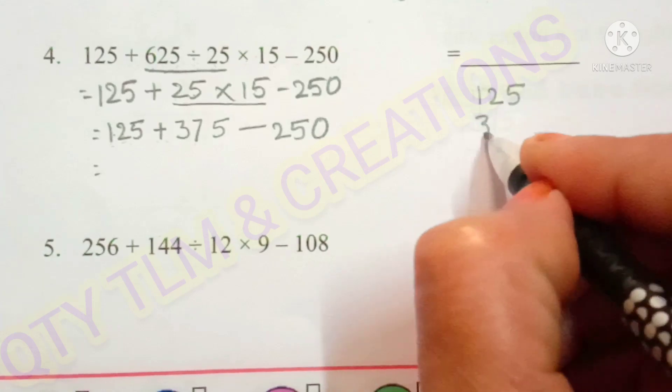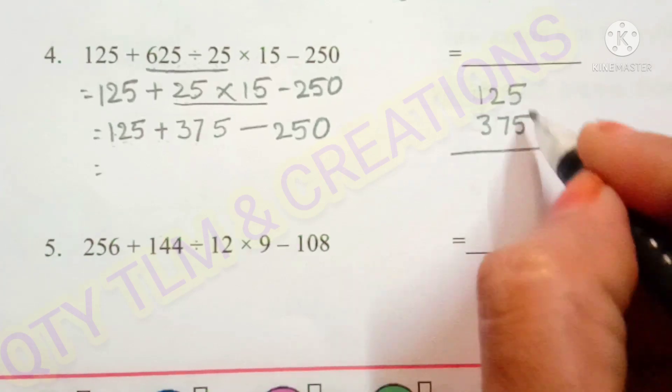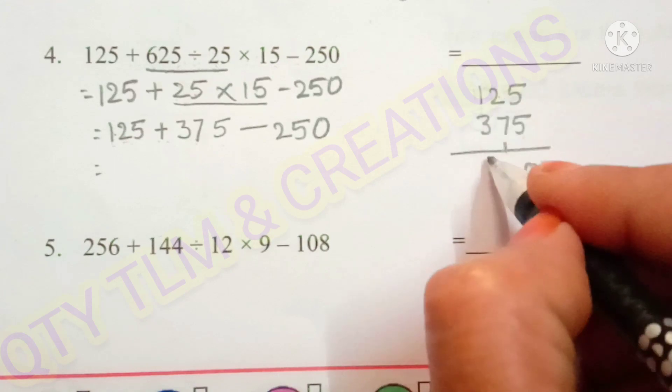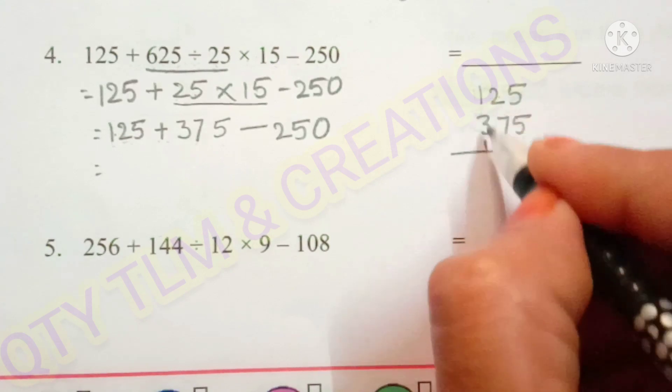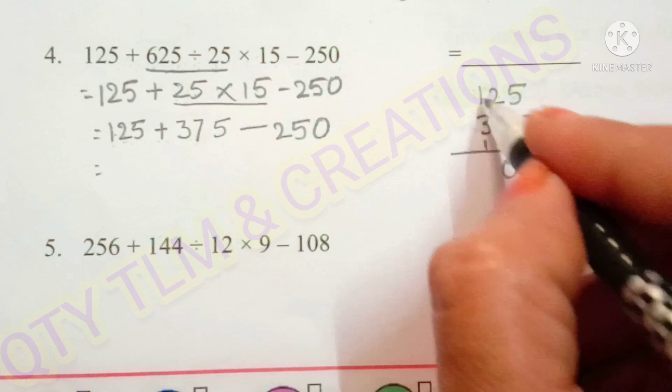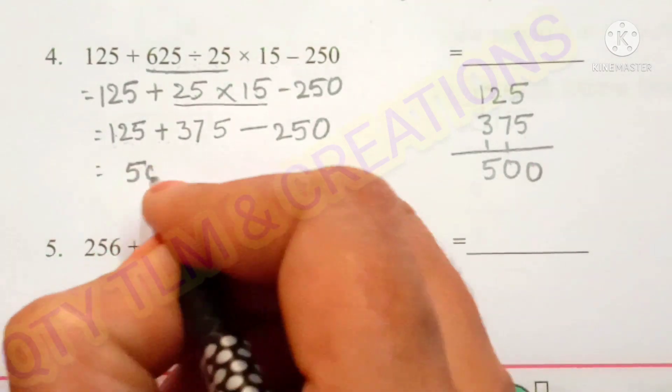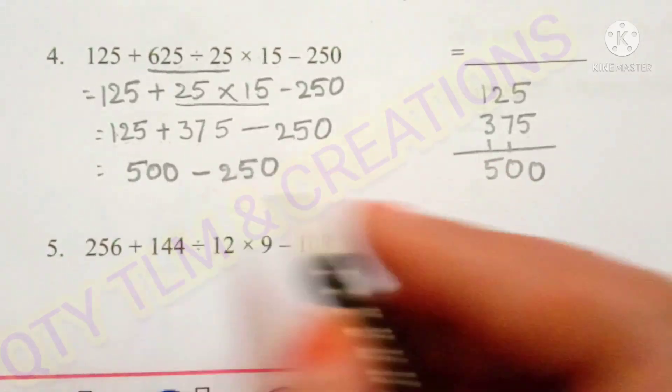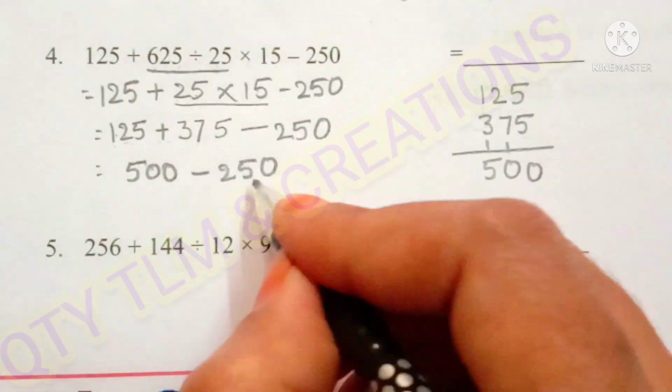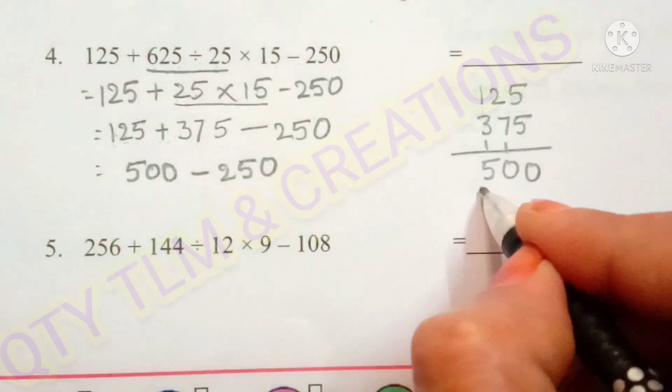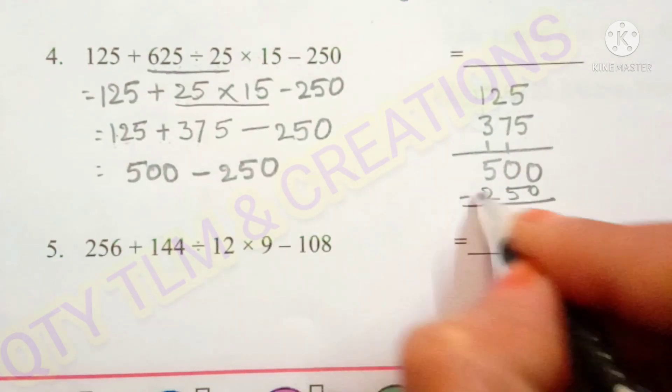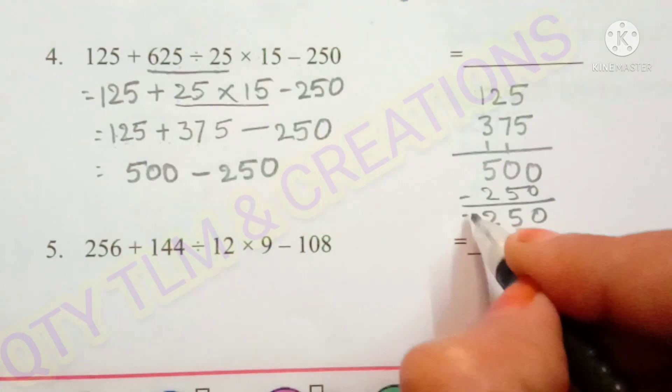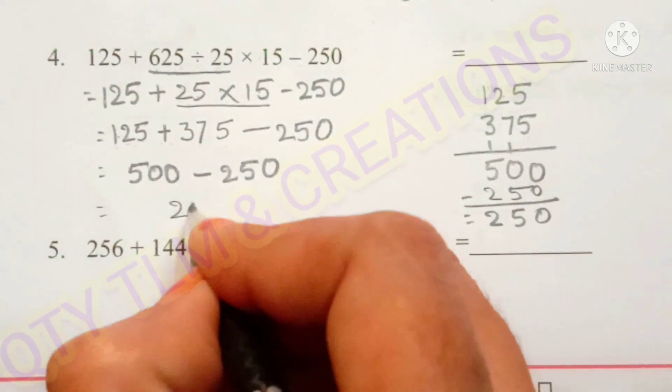Next operation is addition. So we add 125 plus 375. 5 plus 5 is 10, 7 plus 1 is 8, plus 2 is 10. 1 plus 3 is 4, plus 1 is 5. So that is equal to 500 minus 250. When we subtract 250 from 500, so we get 250. So the answer is 250.